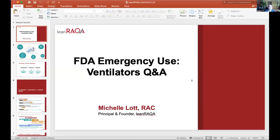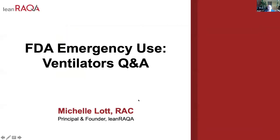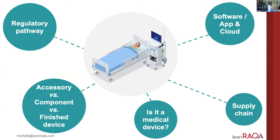We're going to go through some of the FAQs and also some of the specific questions received from the Helpful Engineering teams. They really broke down into a couple of key categories: the regulatory pathway, software applications and cloud, accessories versus components versus finished devices, is it even a medical device, and the supply chain. I've grouped them according to similar interests because they naturally build upon each other.